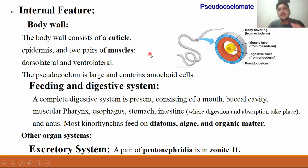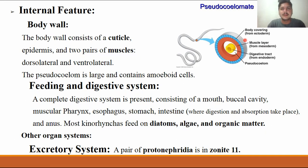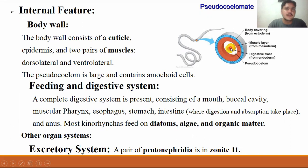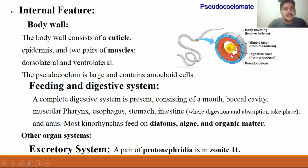These are pseudocoelomates, meaning a false coelom is present. To understand why it is a pseudocoelom: if we cut the worm in cross section, the outermost wall is the ectoderm, the red layer is the mesoderm lining the ectoderm, and the inner yellow layer of cells is the endoderm surrounding the gut cavity. Because the endoderm is not surrounded by the mesoderm layer, this kind of coelom is called a pseudocoelom.